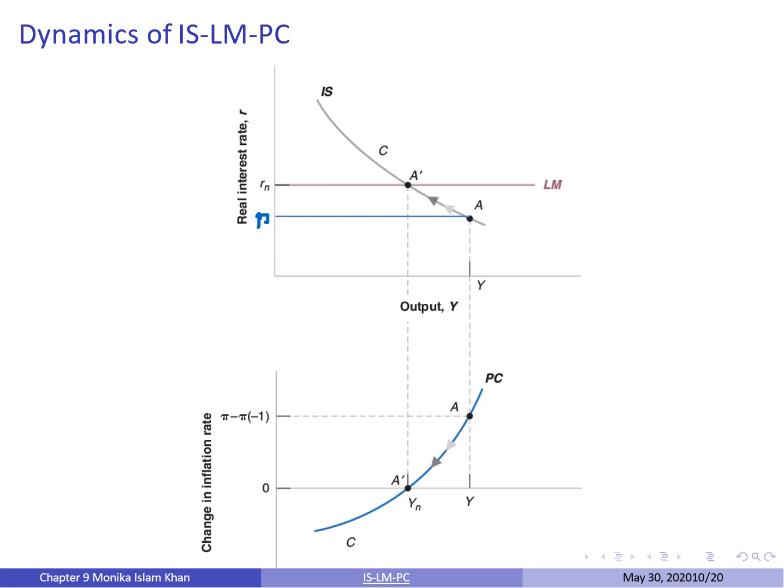Now let's look at the dynamics of the ISLM-PC model. Imagine the real interest rate is R, which is less than Rn. If there is no change in the policy rate nor in any variables affecting the IS curve, output remains above potential and the inflation rate keeps rising. At some point, policy is likely to react. The central bank will eventually intervene and increase the policy rate so as to decrease output back to potential, eliminating pressure on the inflation rate.